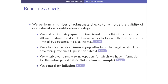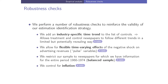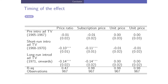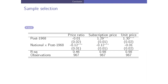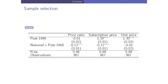We perform robustness checks to reinforce the identification strategy: we add an industry-specific time trend allowing treated and control newspapers to follow different trends; we control for inflation by using constant euros; we allow for flexible time-varying effects of the negative shock to verify no pre-trends and that effects persist in both the short run and long run; and we restrict our sample to newspapers observed for the entire 1960–1974 period to have a balanced panel, addressing entry and exit during the period.